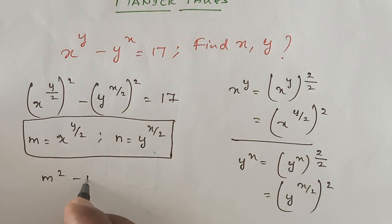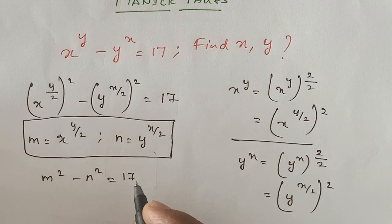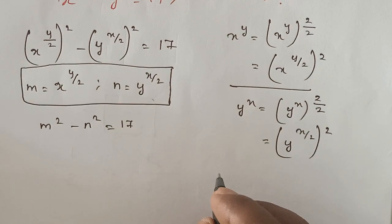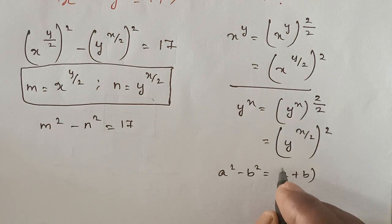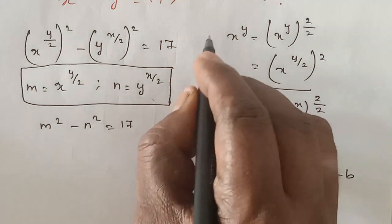So it becomes m^2 - n^2 which is equal to 17. So we know the formula that a^2 - b^2 is equal to (a+b)(a-b).